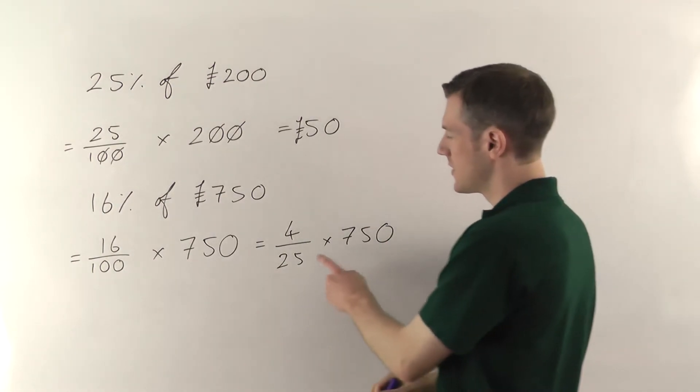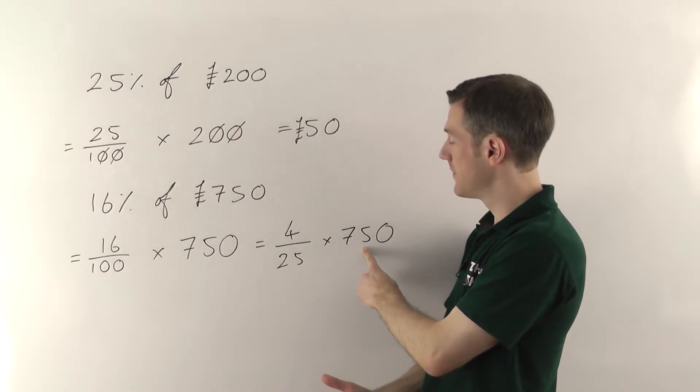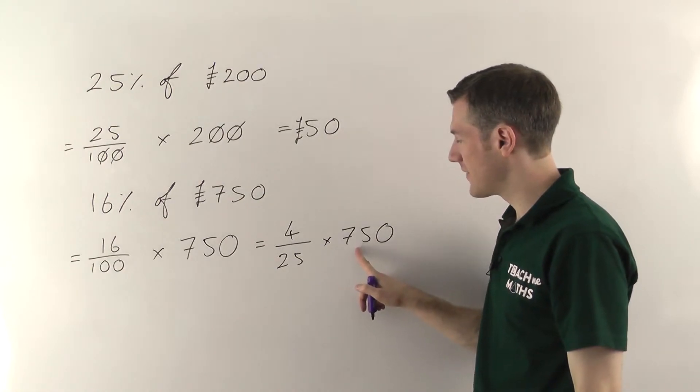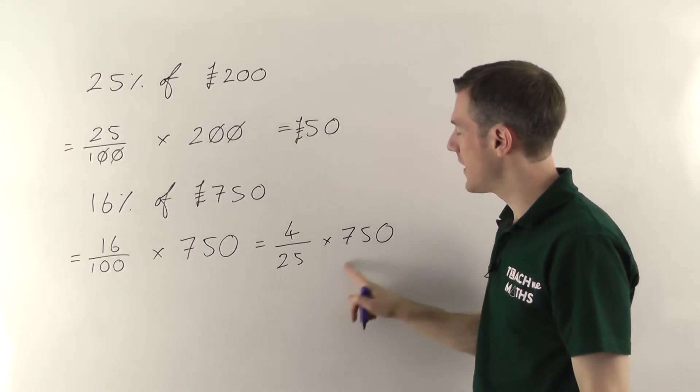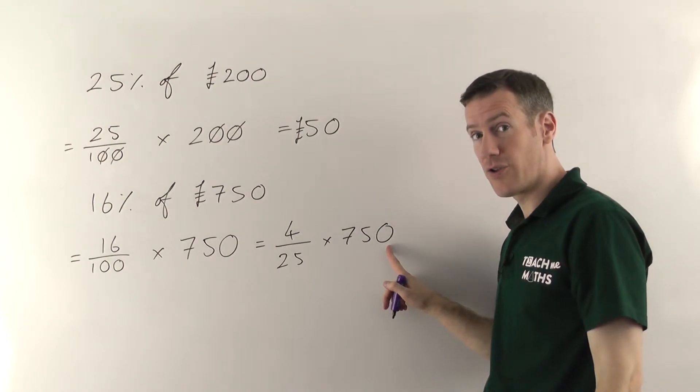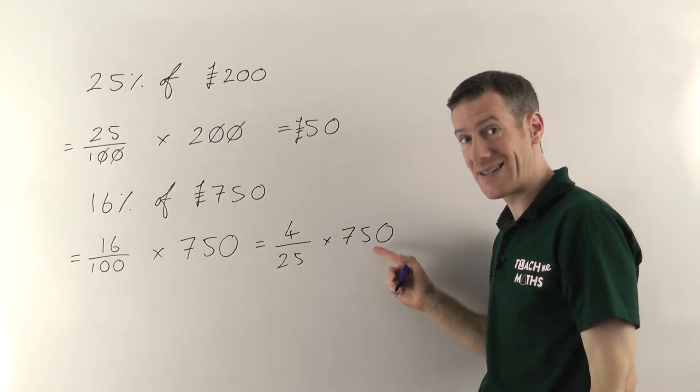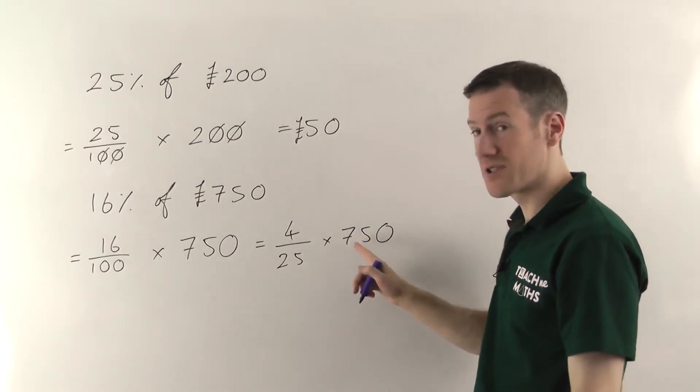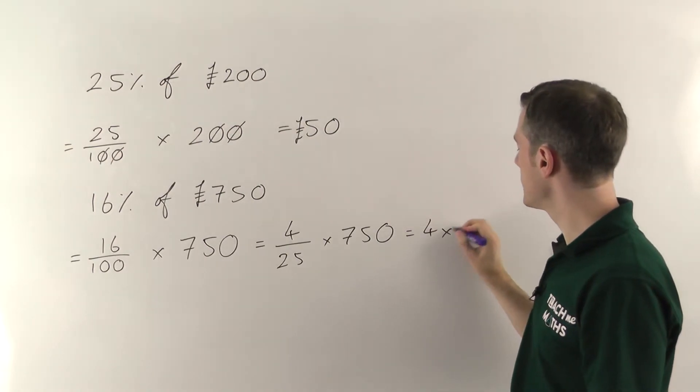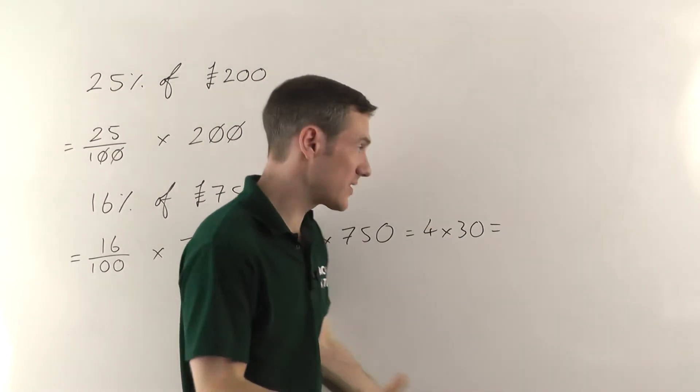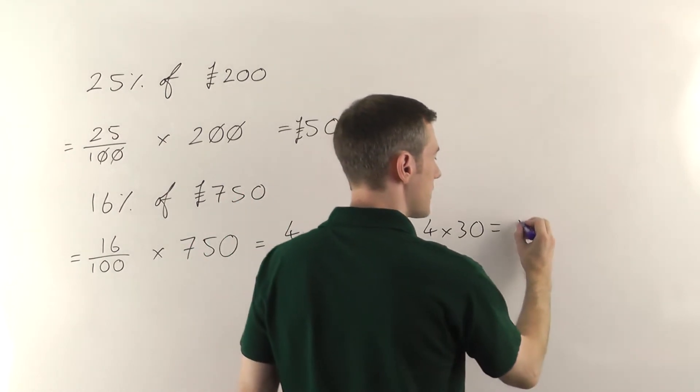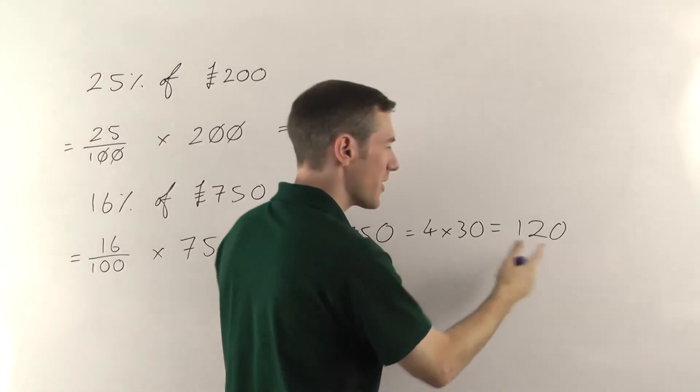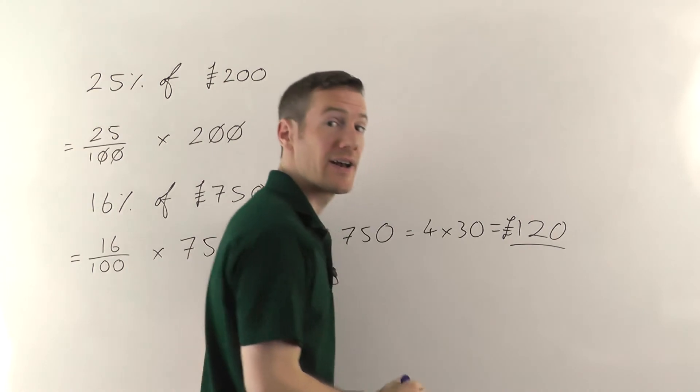And this is looking a bit more promising because 25 divides into 75. So I could use that. So, well if 25s go into 75 3 times, then 25s into 750 will go 30 times. There's an extra 0 on the end so I make my answer 10 times bigger. So it's not 3, it's going to be 30. So it's going to be 4 times 30. And 4 times 30 is 120. 4 times 3 is 12, stick an extra 0 on the end. We were finding 16% of 750 pounds. So it's going to be 120 pounds is your final answer.